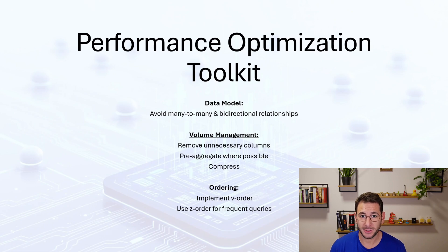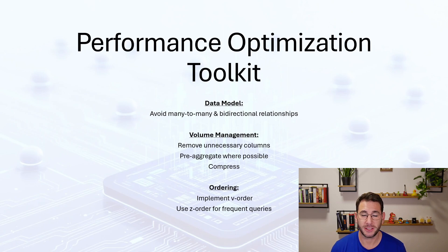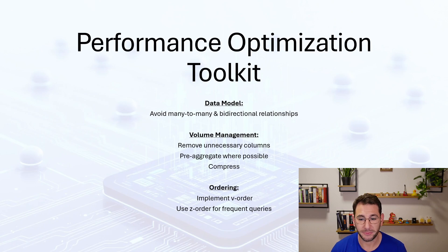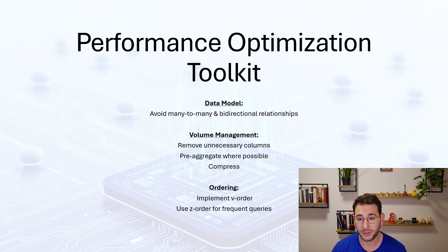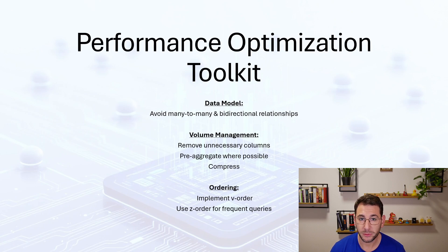Now for the most interesting part of this video: the performance optimization toolkit. How can we tune our performance for Direct Lake and avoid the limitations mentioned earlier? First, general data model best practices: avoid many-to-many relationships or bi-directional relationships. Perhaps create bridging tables if you have many-to-many relationships, or avoid them altogether. Bi-directional relationships should not be part of your data model — they really reduce performance and strain resources even more in Direct Lake mode. Then we want to manage our data volume: remove unnecessary columns, trim columns as much as possible. For example, having JSON string columns is very harmful to your performance.